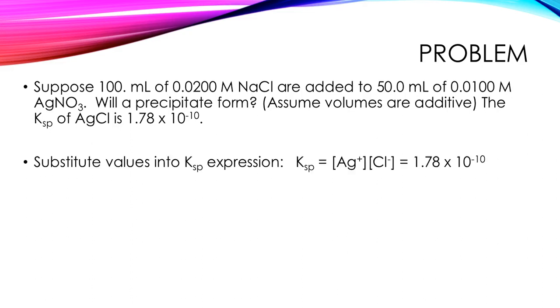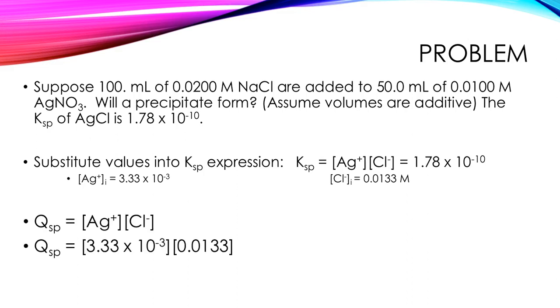So we're going to substitute the values for the silver ion concentration and the chloride ion concentration into our KSP expression, but we're going to call it Q because we don't know if we're at equilibrium or not. So we just found those values on the previous slides and I just wrote them down again because I couldn't remember them otherwise. So we're going to substitute those into our QSP expression and get a number and I get a value for QSP of 4.43 times 10 to the minus fifth. Great. We're not done yet.